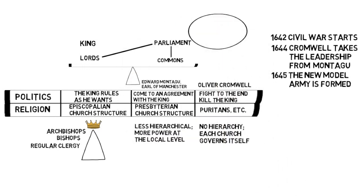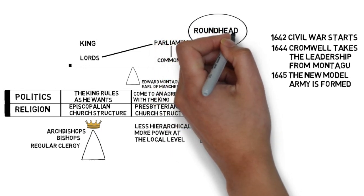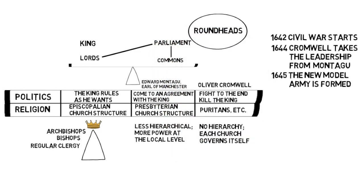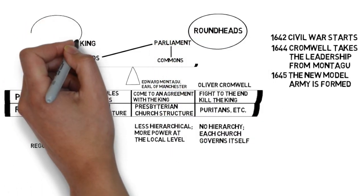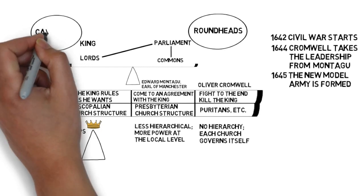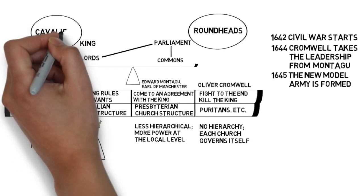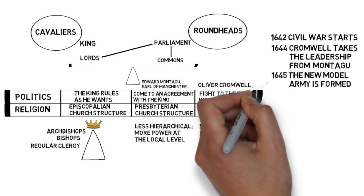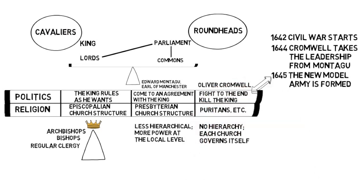Because of the round metal helmets that they wore, they were known as Roundheads. The supporters of the king — his army — were known as Cavaliers, because they mostly went on horseback, which is what the word cavalier means. The New Model Army was loyal to Cromwell and to the aims of the more extreme Puritan faction in parliament that wanted to fight to the end and, if necessary, kill the king.